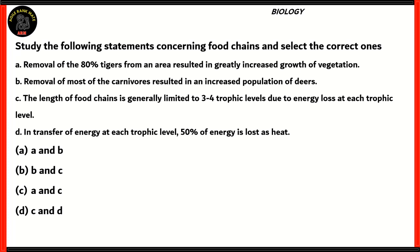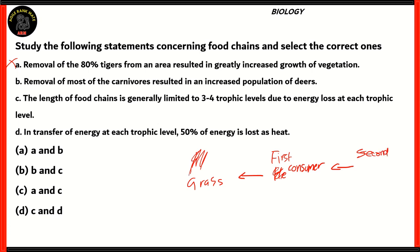Next, biology: study the following statements concerning food chains and select the correct ones. Statement A says removal of 80 percent of tigers from an area resulted in greatly increased growth of vegetation. In a basic food chain: grass is eaten by a first consumer, which is eaten by a second consumer, and so on. The tiger fits somewhere in the second or third consumer position.